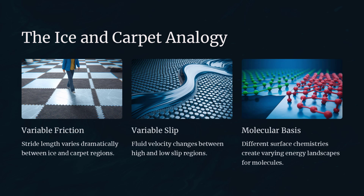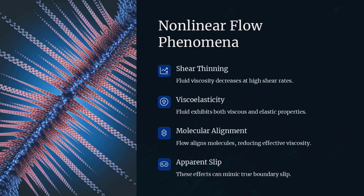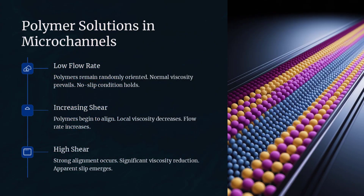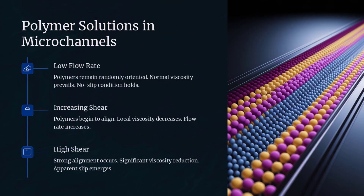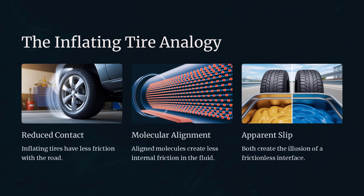Apparent slip can also emerge from nonlinear flow phenomena such as shear thinning or viscoelasticity, where fluid properties change with shear rate. At high shear, near-wall fluid layers may align or thin, reducing local viscosity and mimicking slip. Additionally, gas nanobubbles adhered to the surface can introduce effective slip by acting as lubricating cushions. These nonlinear effects complicate the attribution of measured slip purely to boundary condition breakdown. Polymer solutions in microchannels show increased flow rates at high shear that resemble slip behavior but stem from shear thinning — like a car whose tires inflate under speed, reducing road contact and giving the illusion of a frictionless ride.